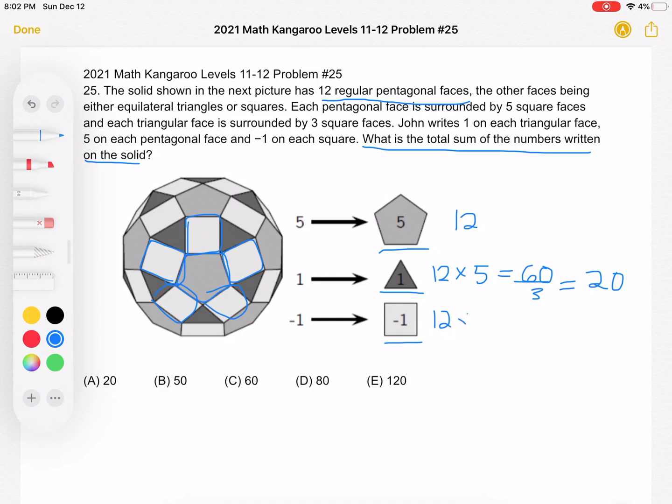So with 12 pentagons, 5 squares per pentagon is a total of 60. Again, we overcount it. So we see that each square has sides in common with 2 different pentagons. We divide by 2 for a total of 30.